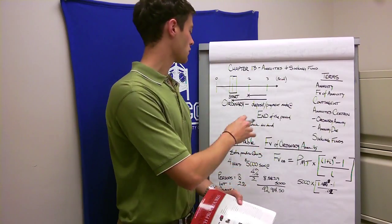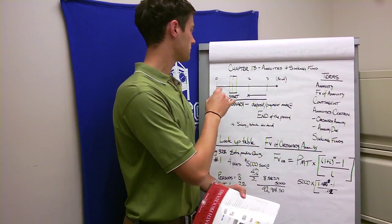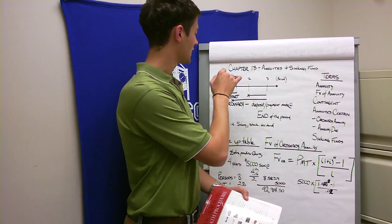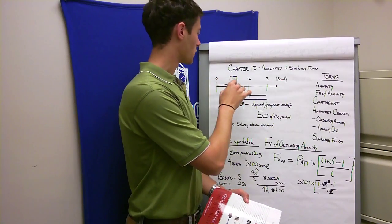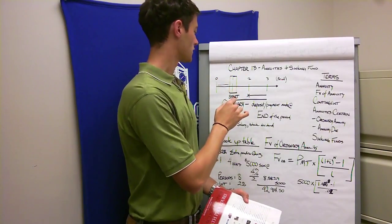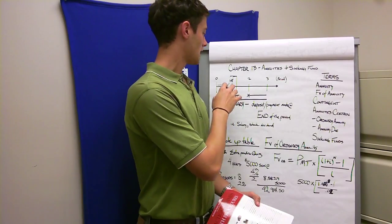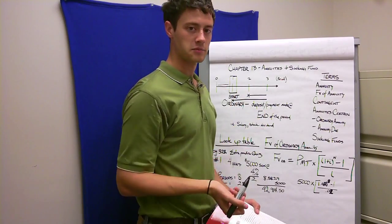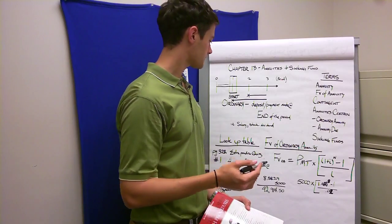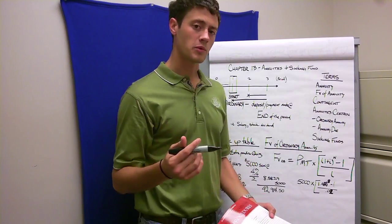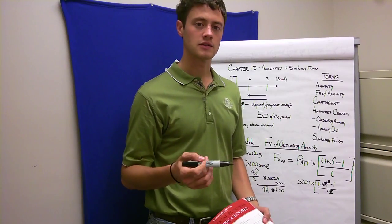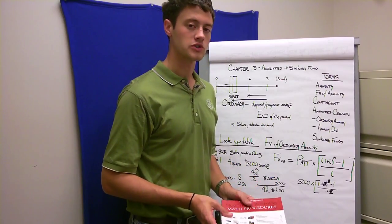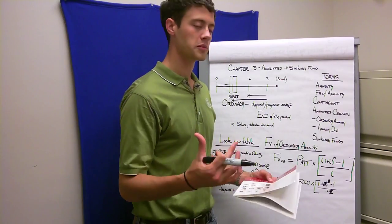Here's a nice little graph to help you understand — you work this entire time, then you get paid, then you work and get paid again. It starts at the end of the period. There are a couple of ways to calculate it: you can either use the lookup table or you can use the formula.